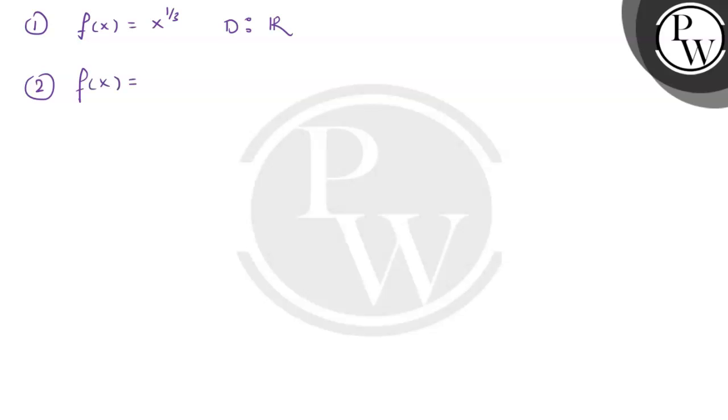Now let's look at the domain of the given functions. The first function is f(x) equals cube root of x, and the domain is the set of all real numbers. The second function is f(x) equals mod x divided by x; the domain is all real numbers except the singleton set containing zero.